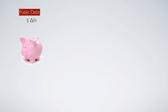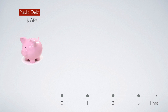If you issue more debt, actually you accumulate your debt balance through time, and how that works is what we are going to learn. So we draw the timeline with days 0, 1, 2, and 3. The vertical height is going to represent the outstanding debt balance of government bonds.